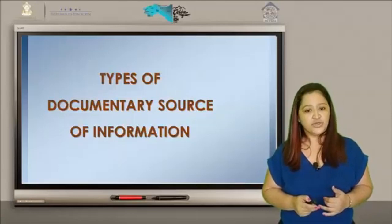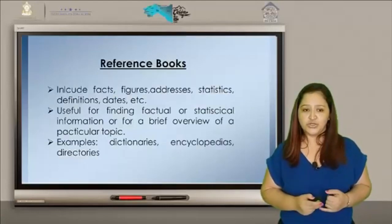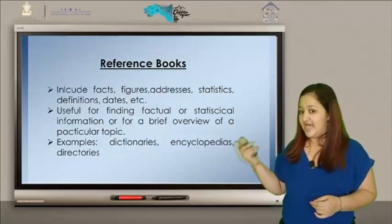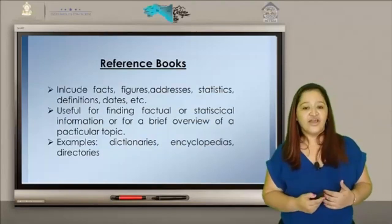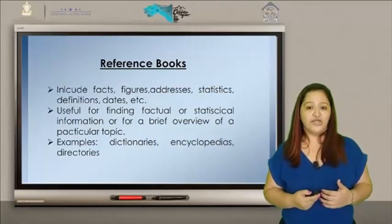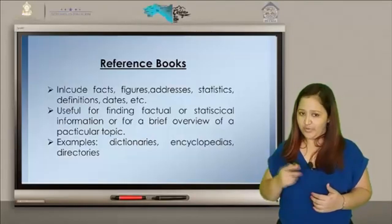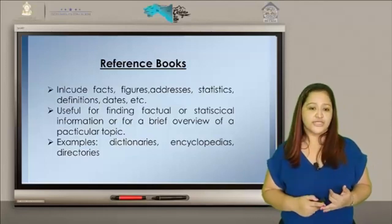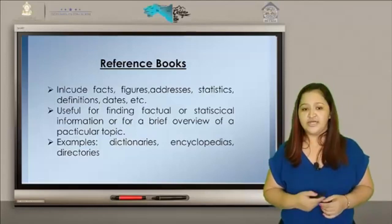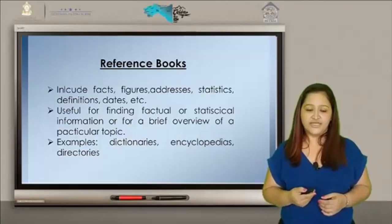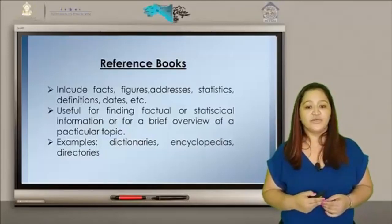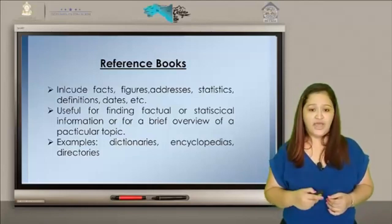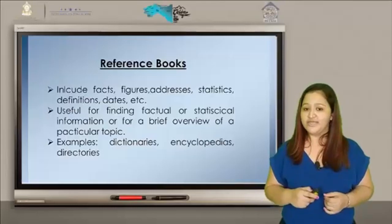Types of documentary source of information. Reference books: includes facts, figures, addresses, statistics, definitions, dates, etc. Useful for finding factual or statistical information or for a brief overview of a particular topic. Examples: dictionaries, encyclopedias, directories. Incluya hechos, cifras, direcciones, estadísticas, definiciones, fechas, etc. Útil para encontrar información fáctica o estadística. Ejemplos: diccionarios, enciclopedias, directorios.